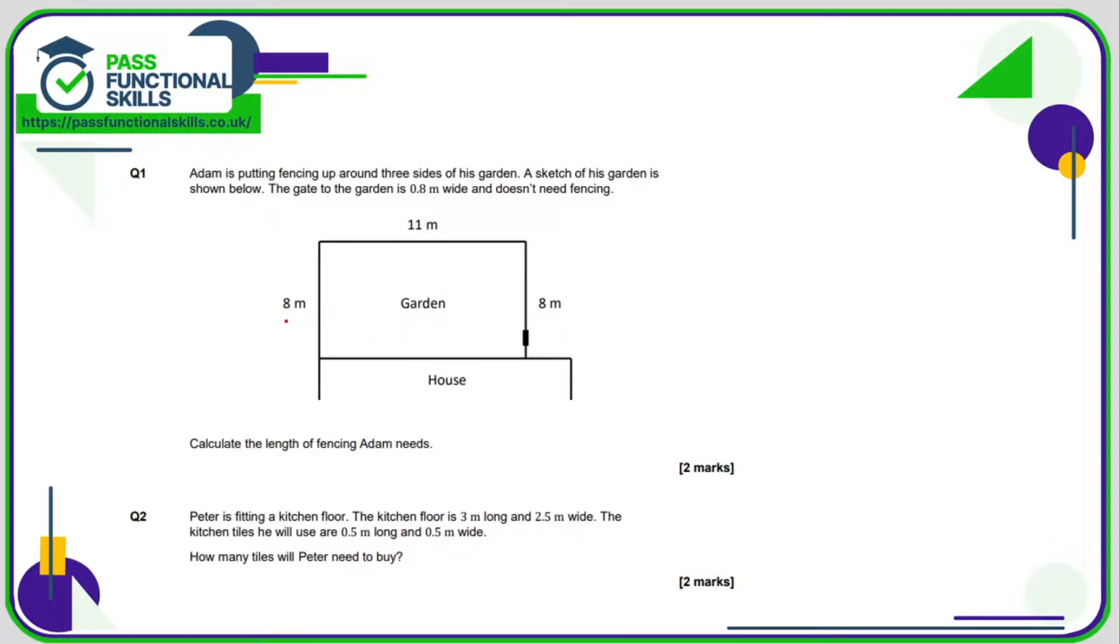He needs fencing for the 8 meters here, for the 11 meters here, and for the 8 meters here, but he doesn't need fencing for the gates, which is 0.8 meters wide. So the total fencing needed is going to be 8 plus 8 plus 11 minus the 0.8, and that comes to a total of 26.2 meters.